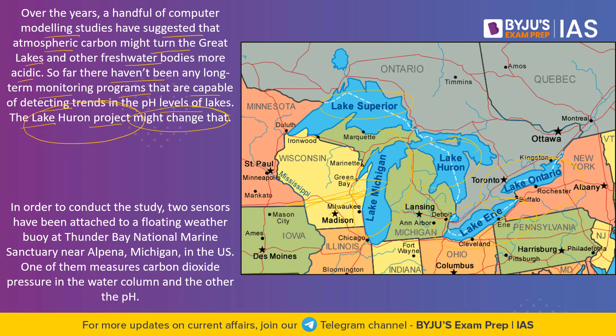In order to understand how much acidification has impacted this system, a study has been conducted. Two sensors have been attached to a floating weather buoy at Thunder Bay National Marine Sanctuary near Alpena, Michigan. One of them measures carbon dioxide pressure in the water column and the other measures pH. The crew present in the area are also collecting water samples at various depths, trying to understand the acidification level in these Great Lakes through chemical analysis.